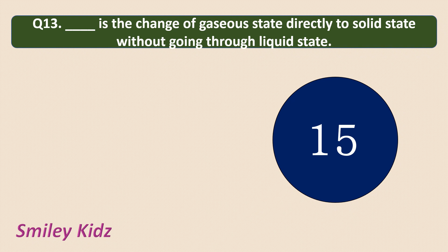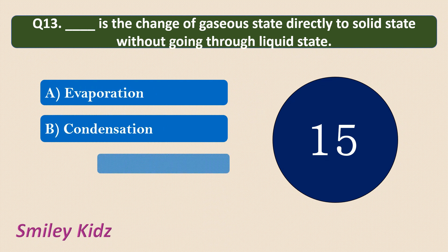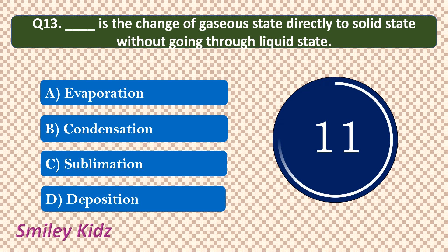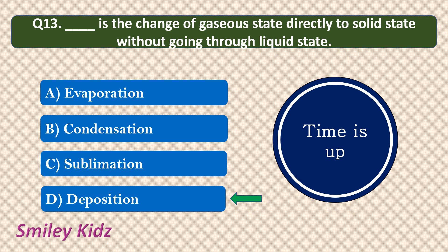Question number 13: Dash is the change of gaseous state directly to the solid state without going through liquid state. Options are: Evaporation, Condensation, Sublimation, Deposition. Your time starts now. Your time is up. The correct answer is Deposition. Deposition is the change of gaseous state directly to the solid state without going through liquid state.